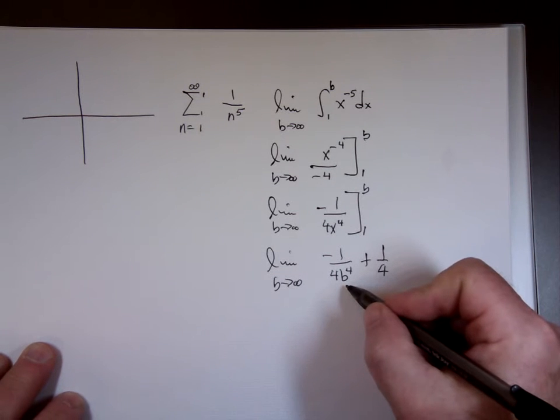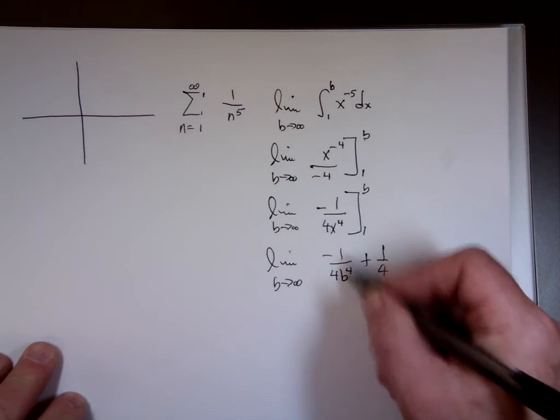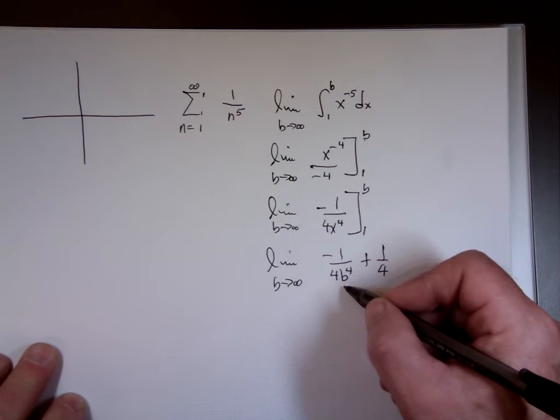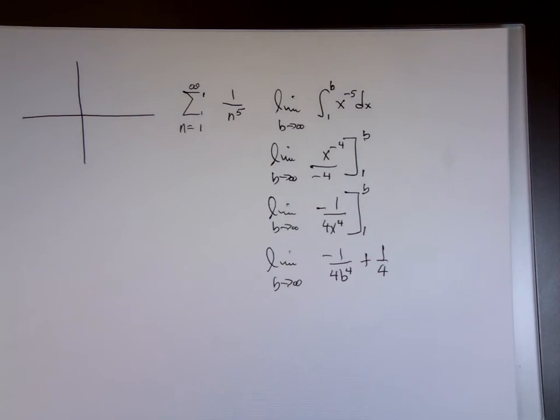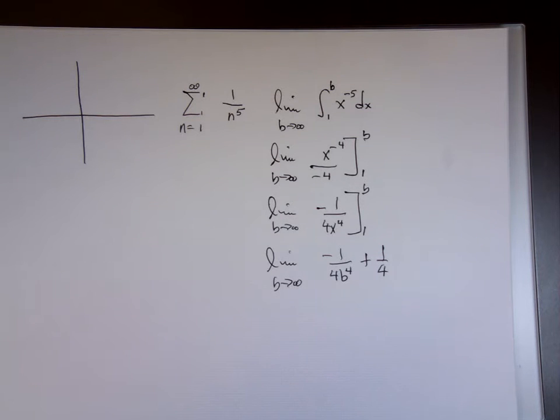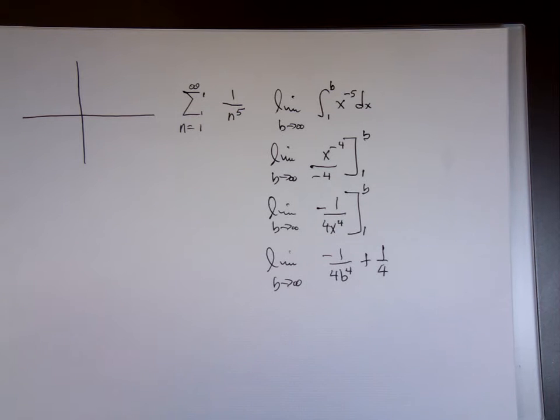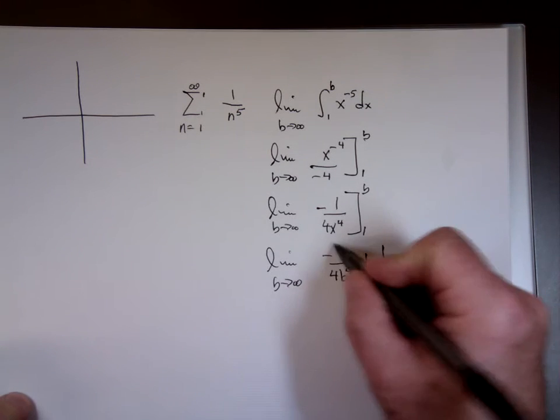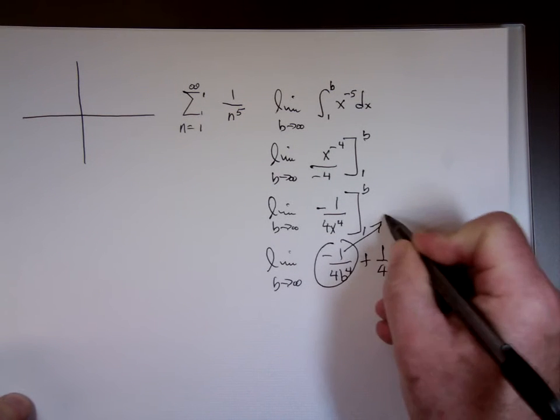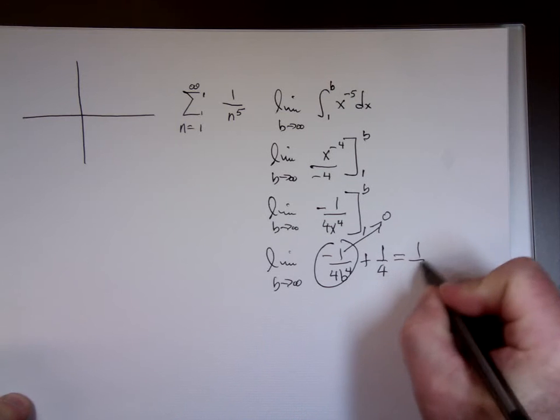Now as B goes to infinity, B to the fourth is going to go to infinity. But its reciprocal, 1 over that, will go to 0. As the denominator increases without bound, that thing will go right to 0. So how close to 0? That gets arbitrarily close to 0. Now that limit is 1 fourth.